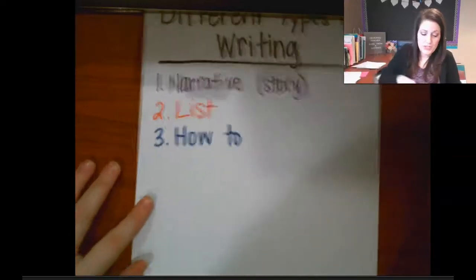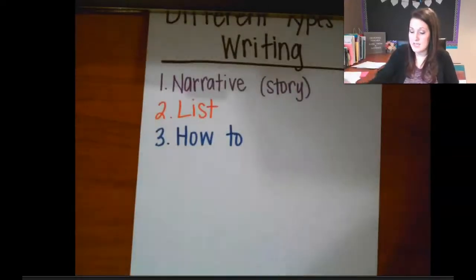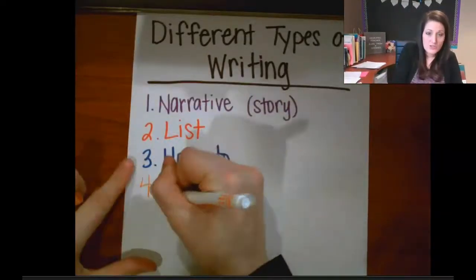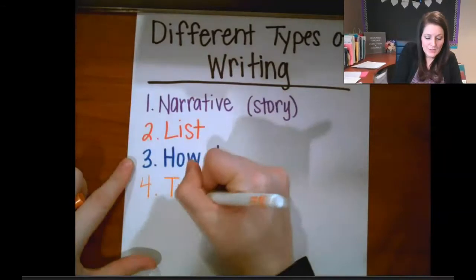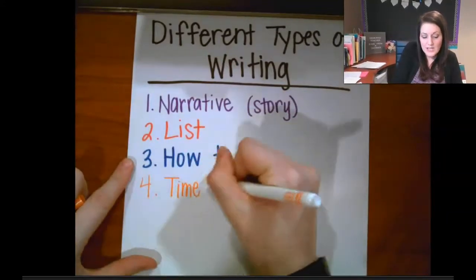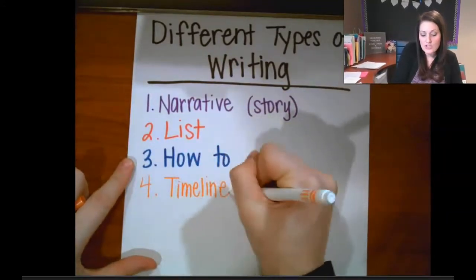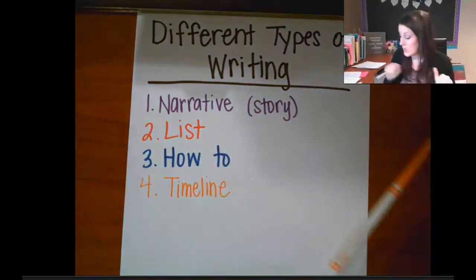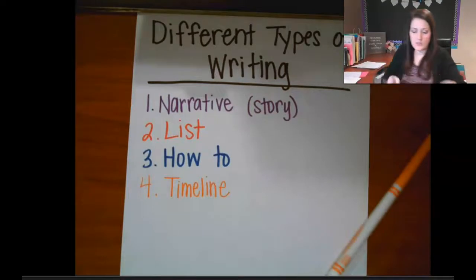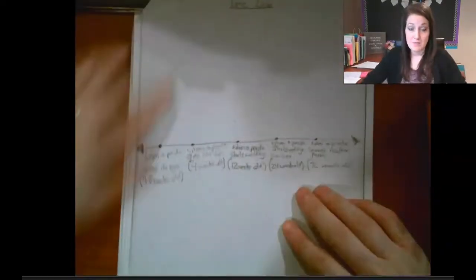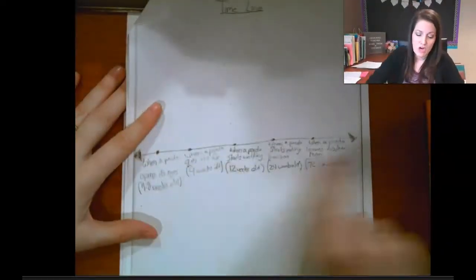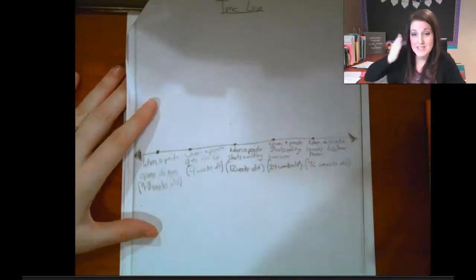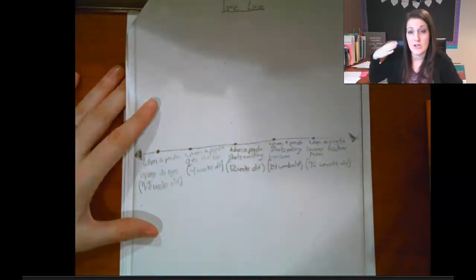Next we're going to talk about a timeline — that's number four. A timeline is going to literally be a line that you draw. This example is about pandas, and it's kind of hard to read because it didn't copy well. It's a line where you put different points to show the times that things happen in a sequence, in an order.